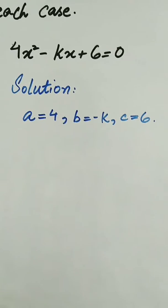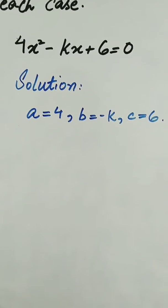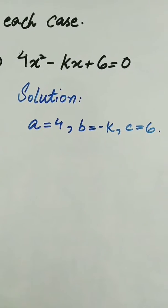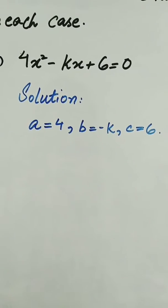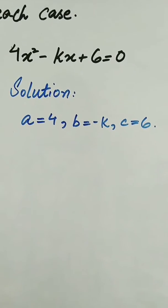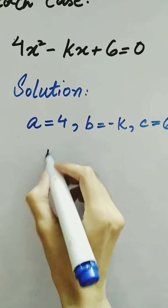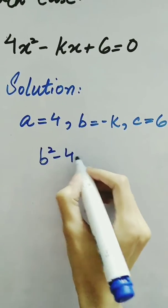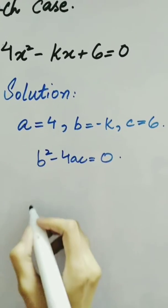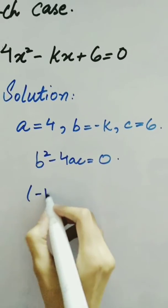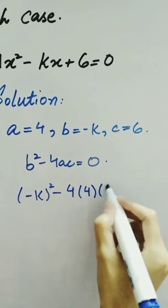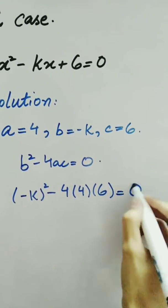Now look at another question: 4x squared minus kx plus 6. Here a is equal to 4, b is equal to minus k (taking the sign with the expression), and c is equal to 6. We have b squared minus 4ac equal to 0 for the repeated root. Putting values in, we have minus k squared minus 4 times 4 times 6 equals 0.